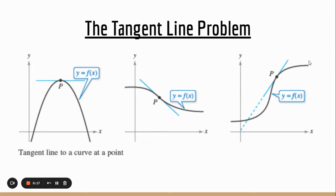You might remember in the beginning of the course, we talked about what types of problems calculus is trying to solve. A big one is something called the tangent line problem. We have three examples of some functions shown in black — they have curves — and we're looking for a line that is tangent to these functions at certain points on the curve, called point P. A tangent line, by definition, just hits it at one point. What we're going to try to do is find the slopes of these lines. But the issue is, when we try to find the slope of a line, we really need two points. Calculus will help us out with this.